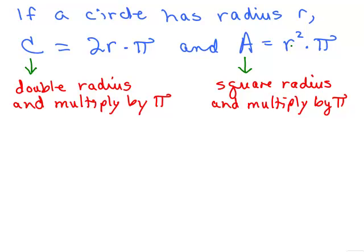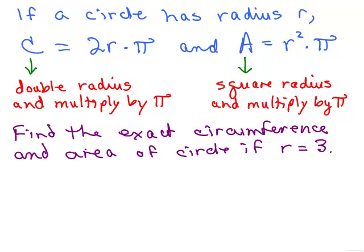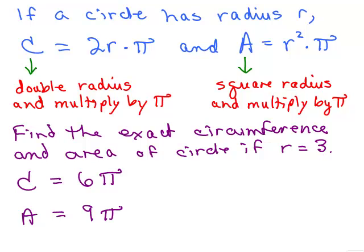Let's do one last quick example: find the exact circumference and area of a circle if r equals 3. For the circumference, I double the radius: 3 times 2 is 6, so the circumference is 6π. For the area, I square the radius: 3 times 3 is 9, so the area is 9π. And that's it. Thanks, Helene — I got the idea while tutoring Helene.